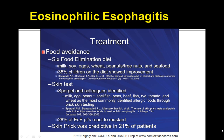Skin testing: the Spurgo and colleagues' study identified milk, egg, peanut, shellfish, peas, beef, fish, rye, tomato, and wheat as the most commonly identified allergic foods through prick skin testing. The skin prick was predictive in 21% of patients for detecting and treating eosinophilic esophagitis. So food avoidance and getting a skin test to find out the exact causes of the allergy are key in your treatment.